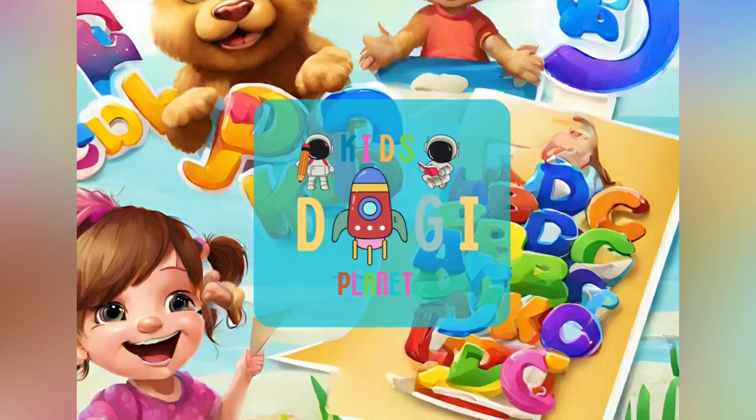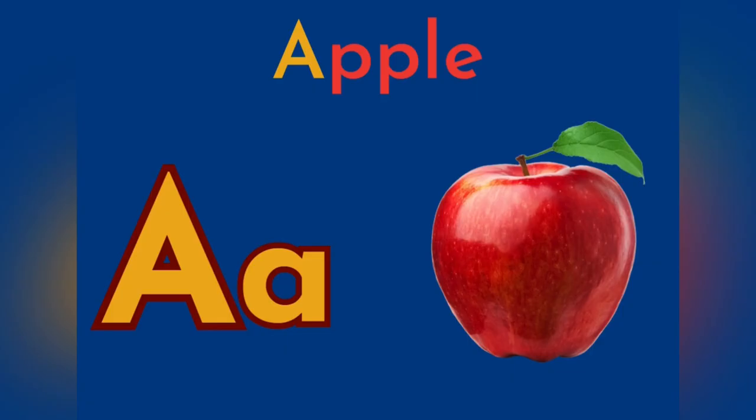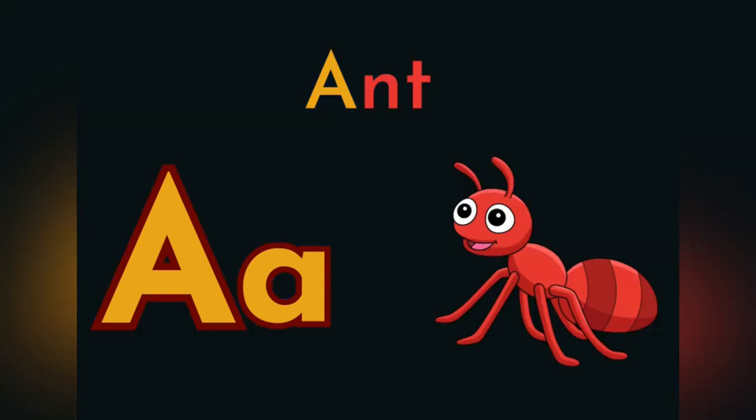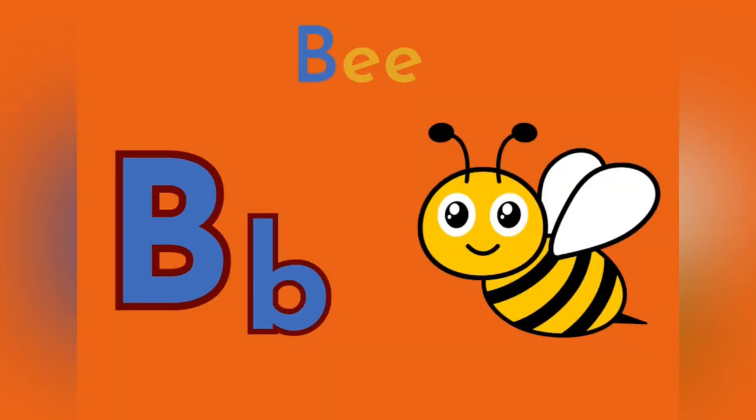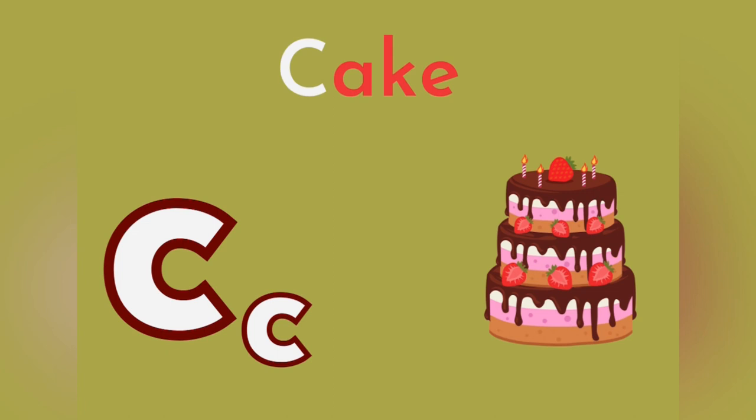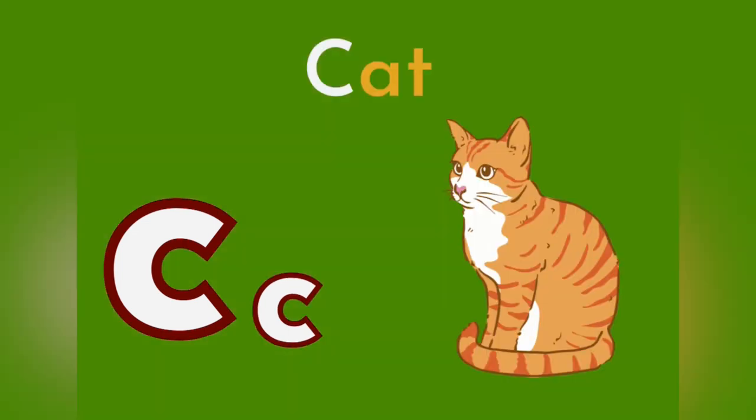ABC with Kids DigiPlanet. A for Apple. A for Ant. B for Ball. B for Bee. C for Cake. C for Cat.